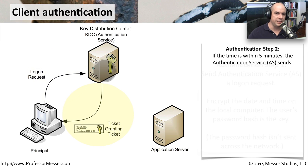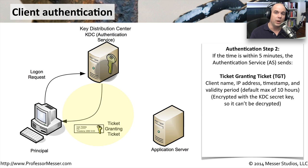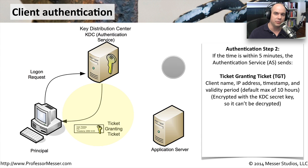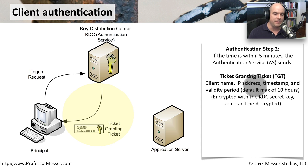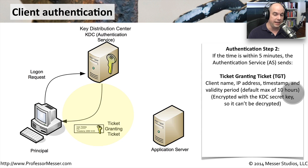When the Key Distribution Center receives this encrypted authentication request, it decrypts it using what it knows to be the client's password hash. It checks that the timestamp encrypted in the request falls within a five-minute period — so this process is very time-sensitive. If everything is legitimate, it sends back what is called a Ticket Granting Ticket. This ticket contains a client name, an IP address, timestamp information, and a validity period — so it's only good for a certain amount of time, after which you'll have to re-authenticate.